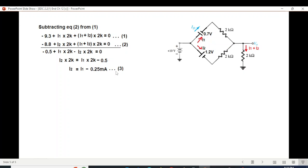Okay now we'll put this value of I2 in any of the equations. I'm putting it in equation number 1. So putting I2 in equation number 1, just where I2 is given we'll write I1 minus 0.25 milliampere. Simplifying, I1 will be 1.633 milliampere.